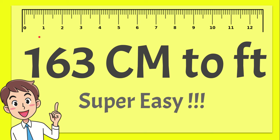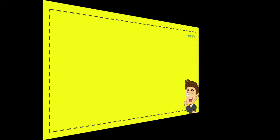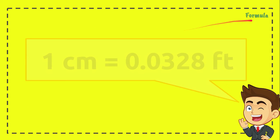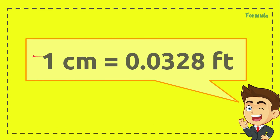I'm going to show you how to convert 163 centimeters to feet. It's going to be super easy. The first thing that we need to have is the formula, and this is the formula: 1 centimeter equals 0.0328 feet.